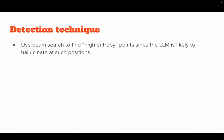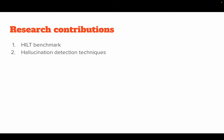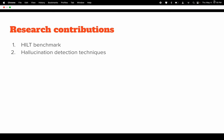For the detection technique, since one likely way for a language model to hallucinate is through beam search, we can examine its details and find high entropy points — these are likely positions where the model hallucinates. This is a preliminary step toward a detection technique. The overall contributions of this work are: proposing a new hallucination benchmark called HILD, and devising new hallucination detection techniques that can detect hallucinations across the defined categories. Thank you.